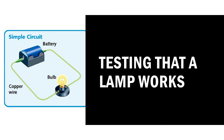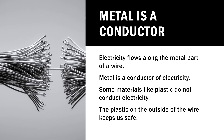Testing that a lamp works — simple circuit. Metal is a conductor. Electricity flows along the metal part of a wire. Metal is a conductor of electricity. Some materials like plastic do not conduct electricity. The plastic on the outside of the wire keeps us safe.